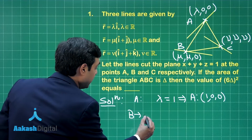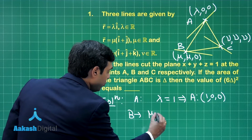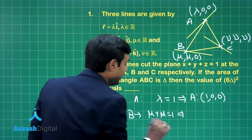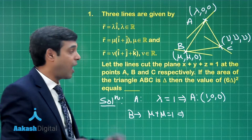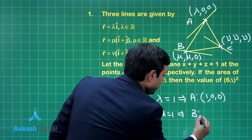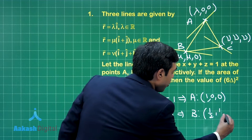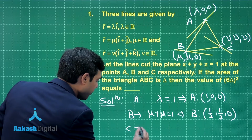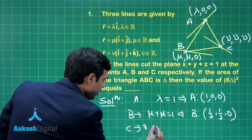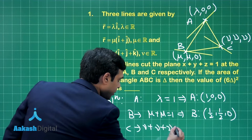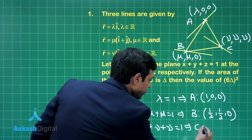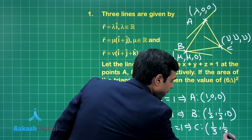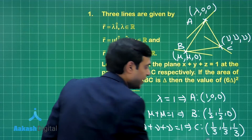From point B: μ + μ = 1, giving μ = 1/2, so point B is (1/2, 1/2, 0). Similarly from C: ν + ν + ν = 1, so ν = 1/3, and point C is (1/3, 1/3, 1/3).